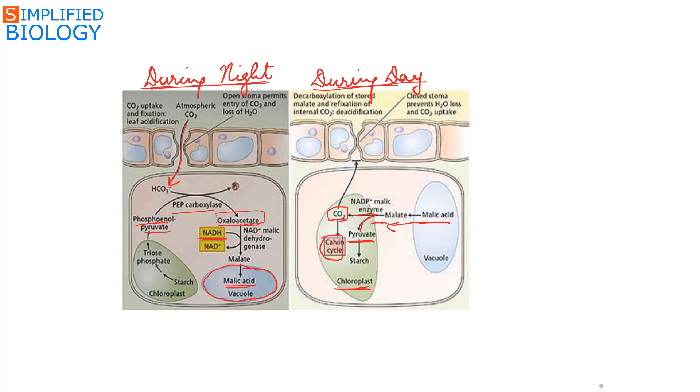The pathway is same as the C4 pathway, the only difference being the process occurring during night occurs in the mesophyll cells of the C4 plants, while the process occurring during the day occurs in the bundle sheath cells of the C4 plants.